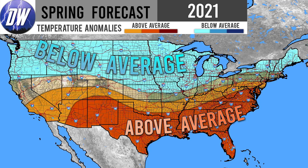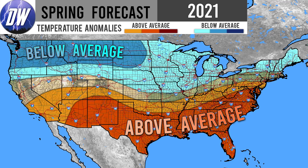The below average temperature region covers the Northwest through the Rockies, the Northern Plains, upper Midwest, Great Lakes, and portions of the extreme Northeast — expecting slightly below average temperatures, very similar to how this winter has gone. The La Niña is still driving these conditions. There's also a moderately below average temperature region for the Pacific Northwest, Northern Rockies, and the Dakotas, where we expect even colder conditions compared to the other blue regions.